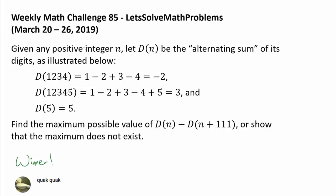Given any positive integer n, let d of n be the alternating sum of its digits as illustrated. For example, d of 1234 is going to be 1 minus 2 plus 3 minus 4, and d of 12345 is 1 minus 2 plus 3 minus 4 plus 5. A one-digit integer's d value is just the integer itself. So all we are doing is putting plus and minus signs between the digits, starting with minus and alternating between plus and minus.